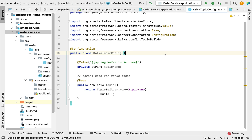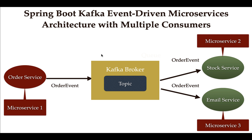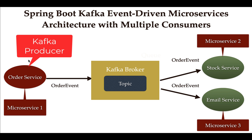Welcome back. In the previous lecture we configured a Kafka topic. In this lecture we'll create a Kafka producer that will produce an event and send it to the Kafka broker. Looking at the architecture, so far we have configured the Kafka producer and topic in the order service. In this lecture we'll create a Kafka producer in the order service project so that it will send the order event to the Kafka topic.